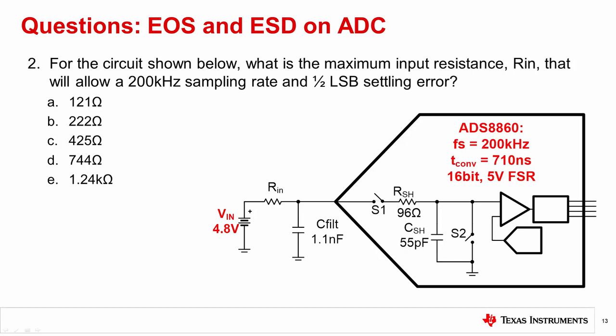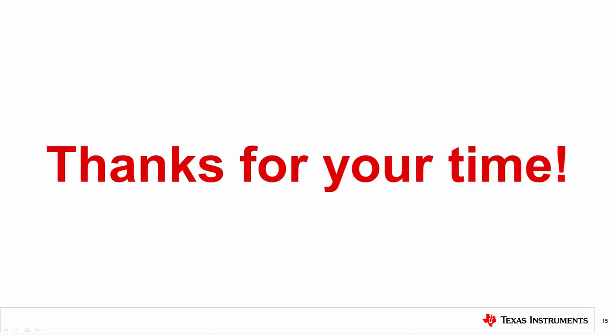Question 2. For the circuit shown below, what is the maximum input resistance Rn that will allow a 200 kHz sampling rate and a 1 half LSB settling error? The correct answer is C, 425 ohms. In this case, the formula is rearranged to solve for Rn. That concludes this video. Thank you for watching.